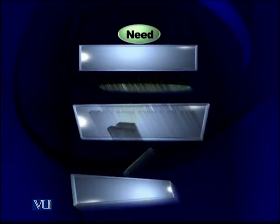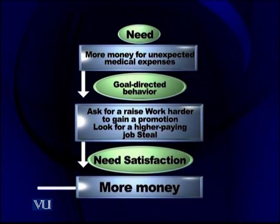Let us understand the process of motivation — I am revisiting this slide so you recall it. Starting from need: the need for extra money, say for unexpected medical expenses. You do not know what will happen tomorrow — you might need money for your own medical expenses or for family members. Now, how important is this need? In our culture, family becomes very important, so you have to arrange that money.